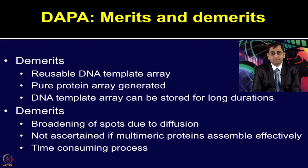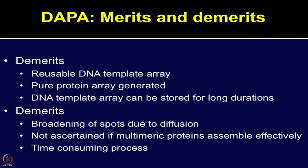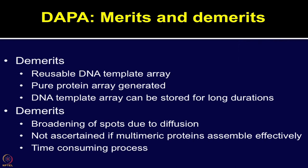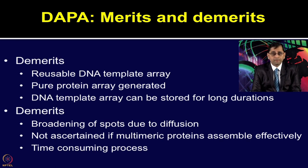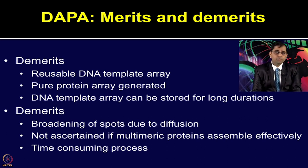DAPPA provides advantages compared to previously described methods. One can obtain pure protein because the protein diffuses through the membrane, so there are no traces or remnants of DNA in the protein array slide. The reusable DNA template is able to print multiple chips, and the DNA template array can be stored at room temperature for long durations. When protein arrays are needed, one can use the membrane with the lysate to generate multiple protein arrays. However, limitations of DAPPA include broadening of spots due to diffusion, uncertainty about whether multimeric protein assemblies effectively form, and it is also a time-consuming process.